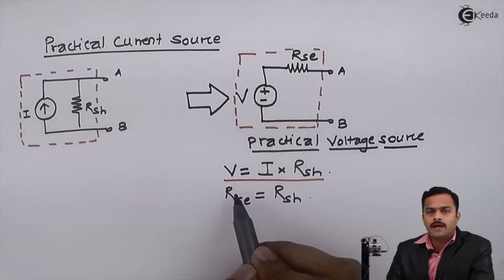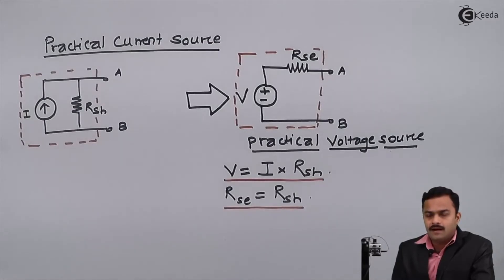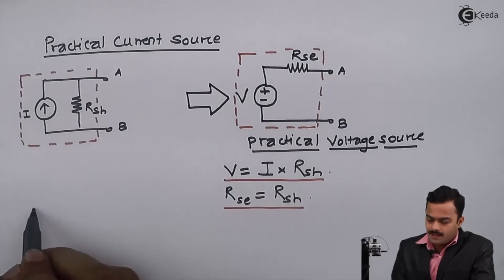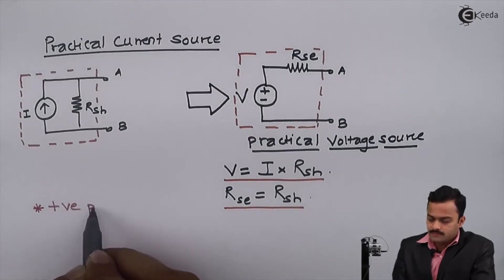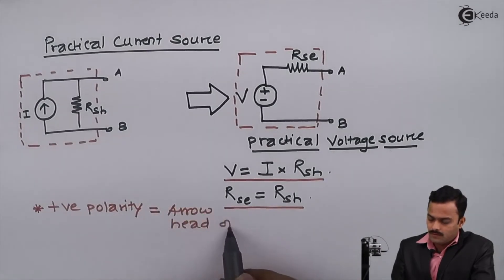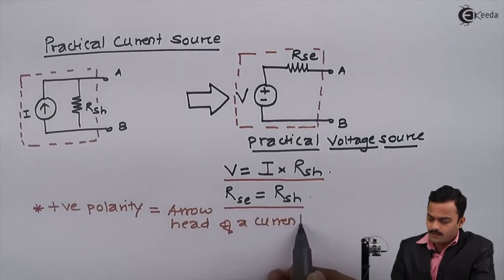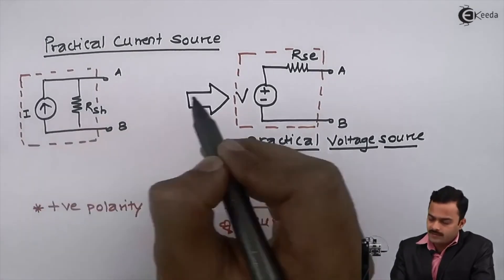And how to determine the polarity? So positive polarity you are getting at the arrowhead. Arrowhead of a current, what does that mean? Here the arrowhead is upward, therefore positive polarity is upward.